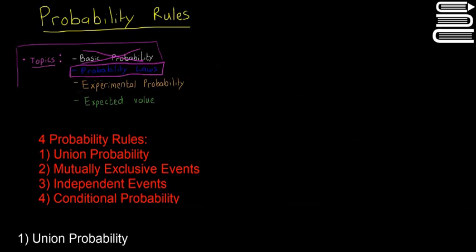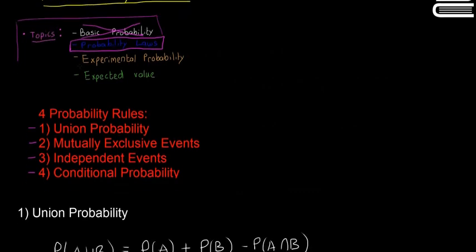The next video is going to be looking at this. There are four basic probability laws or rules: the rule for union probability, mutually exclusive events, independent events, and conditional probability. In this video we're just going to look at union probability, and the next few videos will look at the rest of them. I'll scroll down and we'll start looking at union probability.